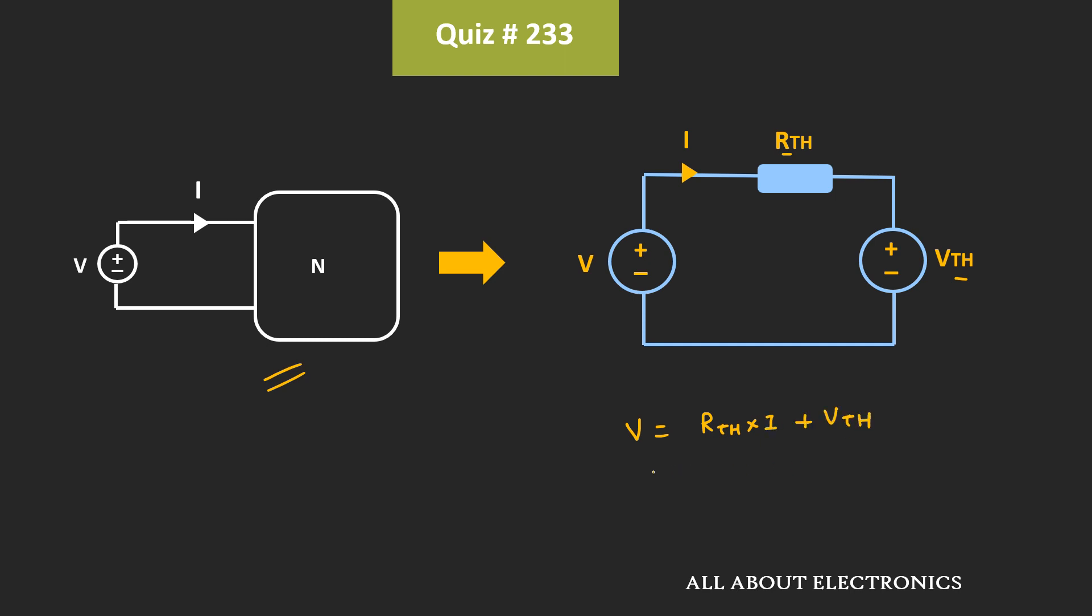And if we compare this expression with the expression of V and I, then we can say that here the value of Rth is equal to 5Ω, while the value of Vth is equal to 25V.